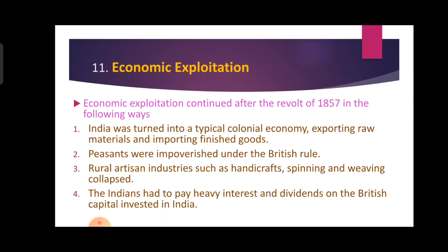The eleventh result is economic exploitation, which continued after the revolt of 1857 in the following ways: first, India was turned into a typical colonial economy, exporting raw materials and importing finished goods; second, peasants were impoverished under British rule; third, rural artisan industries such as handicrafts, spinning and weaving collapsed; fourth, the Indians had to pay heavy interest and dividends on the British capital invested in India.